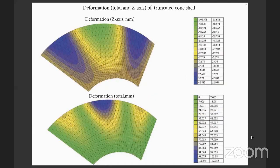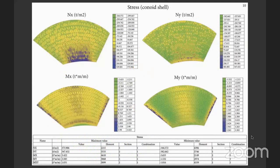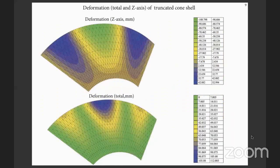Deformation values are presented for the conoid: the max is 22.1057 and the mean is 52.5019. Deformation values for the truncated cone are presented on this slide: the max value is 52.994 and the mean is 108.798.